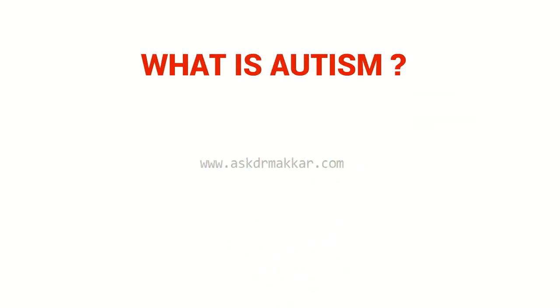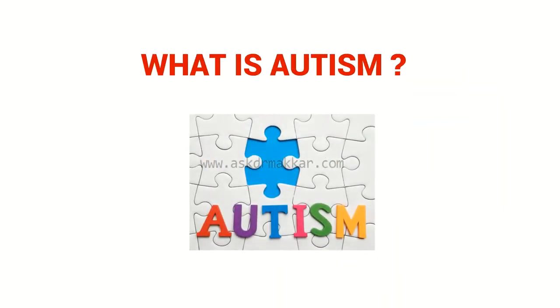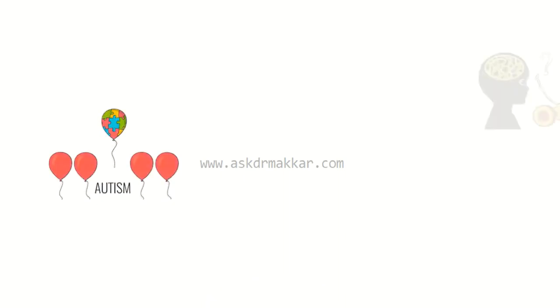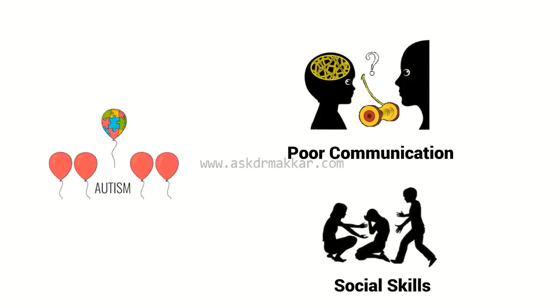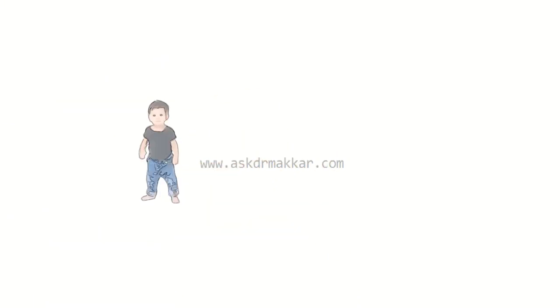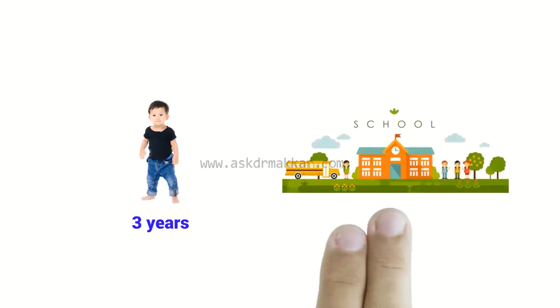What is autism? Autism is a disorder in which children have impaired or poor communication and social skills. It usually becomes apparent within the first three years of life, but some mild cases get diagnosed during early schooling.